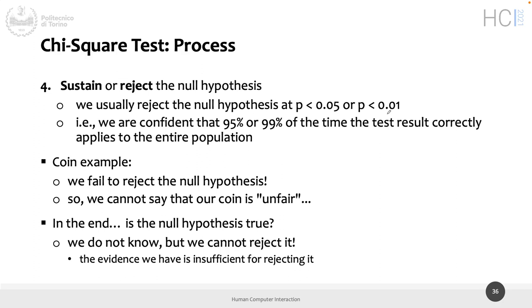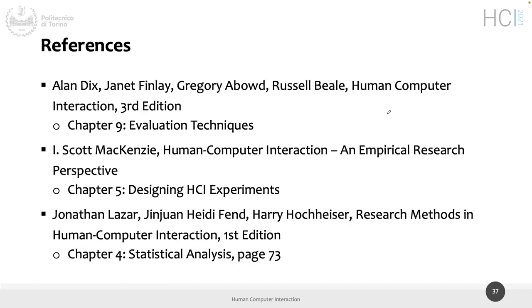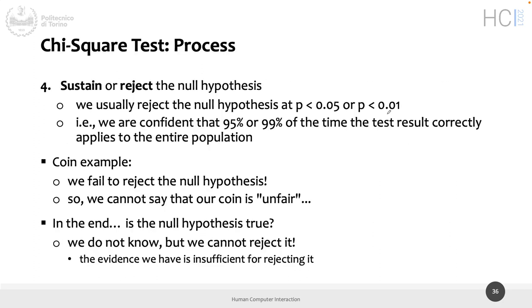This closes the control experiment section. After the holidays, we will have just one lecture — an exercise with the chi-square test applied to a user interface context rather than a coin, but the procedure is the same. If you don't have any questions, happy holidays to all of you, and we will meet again in January.